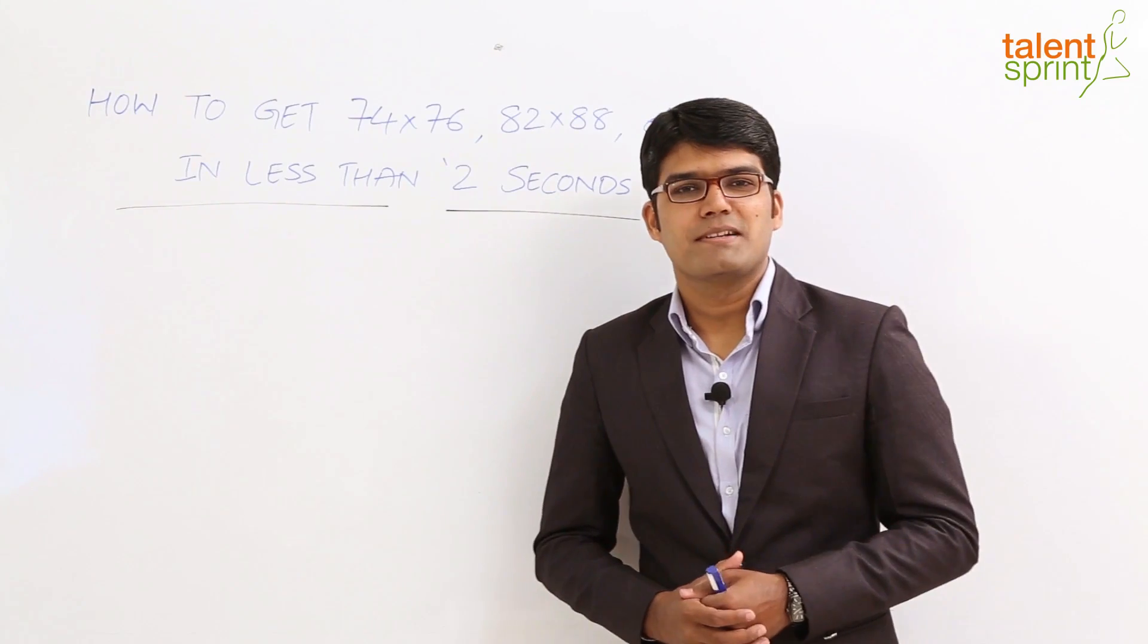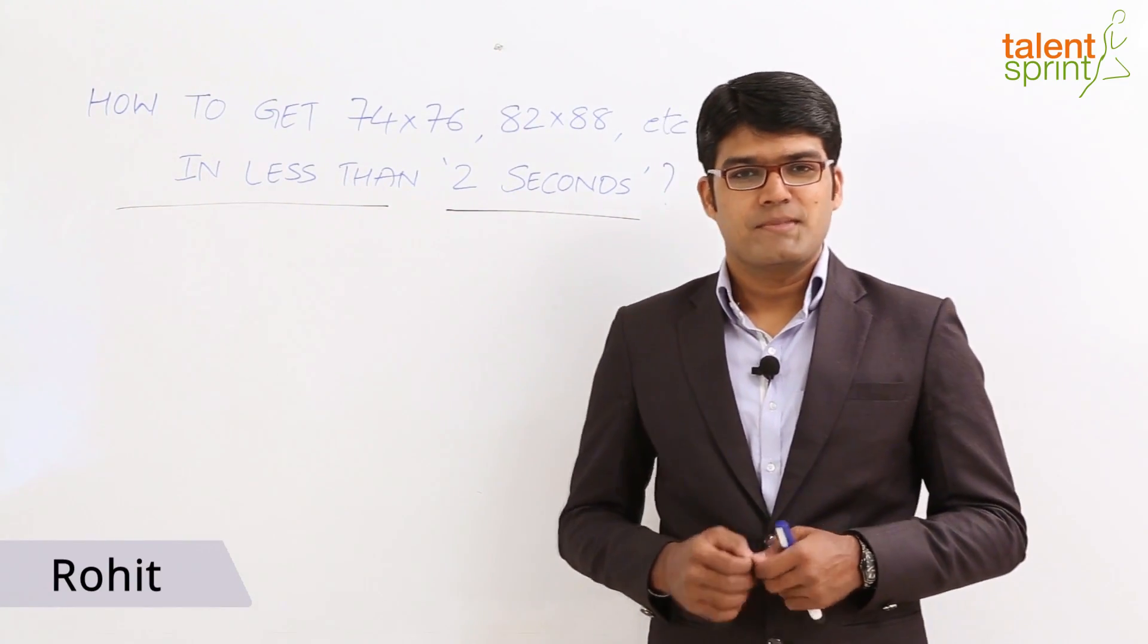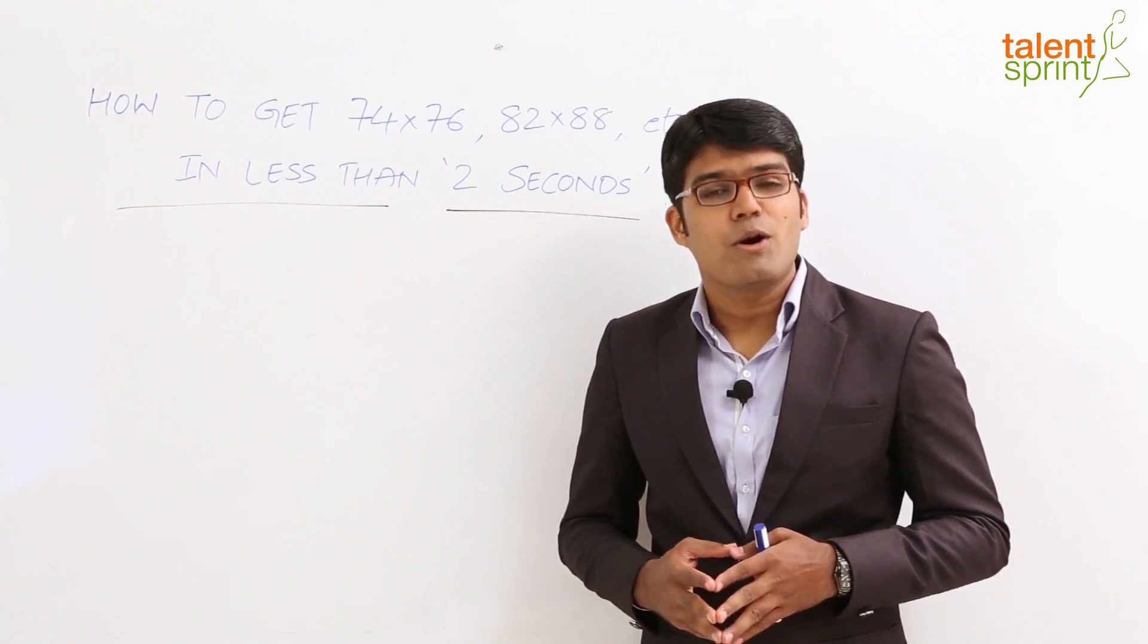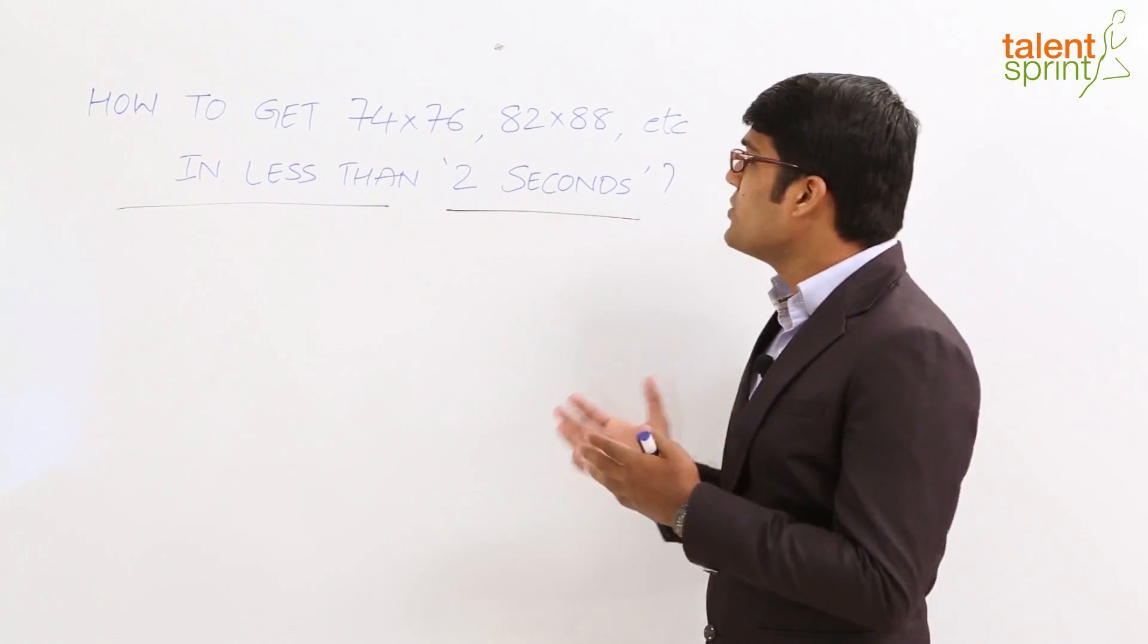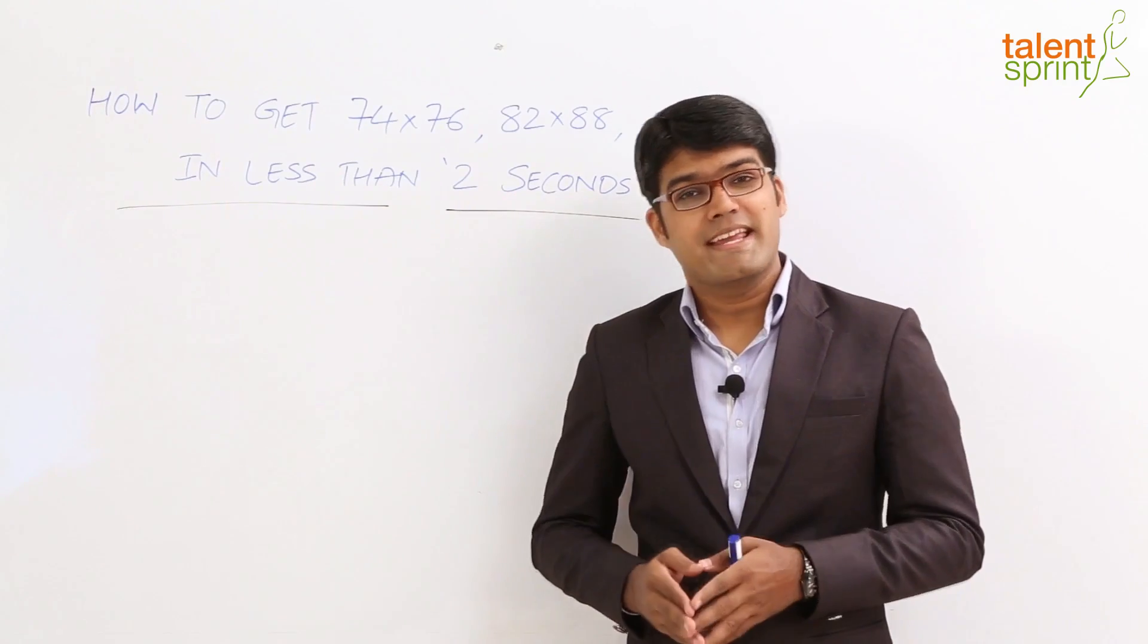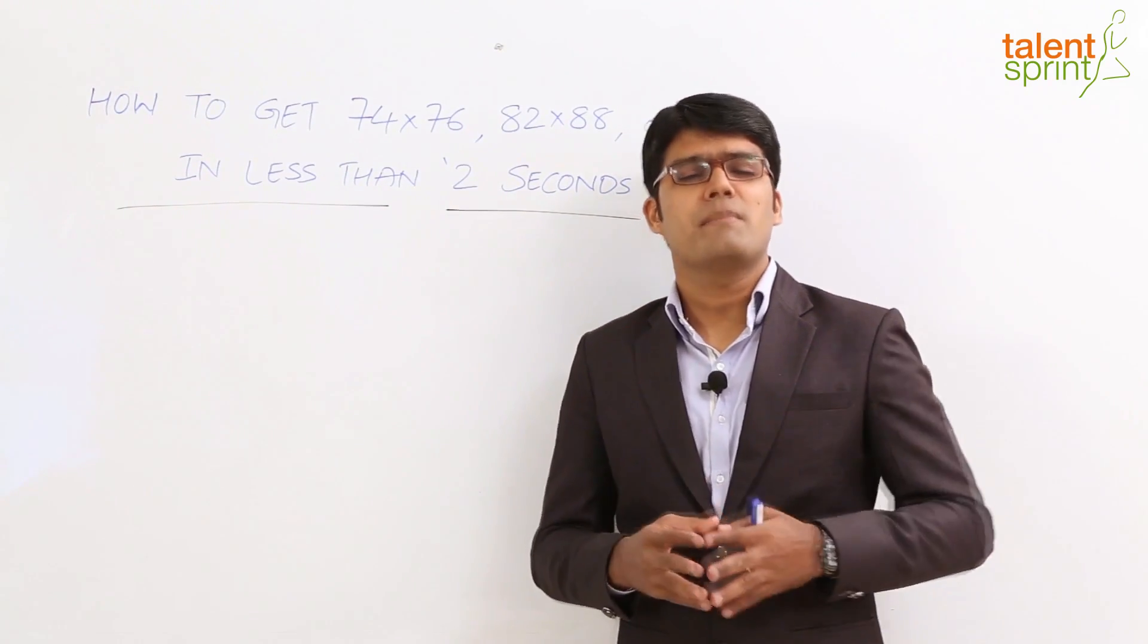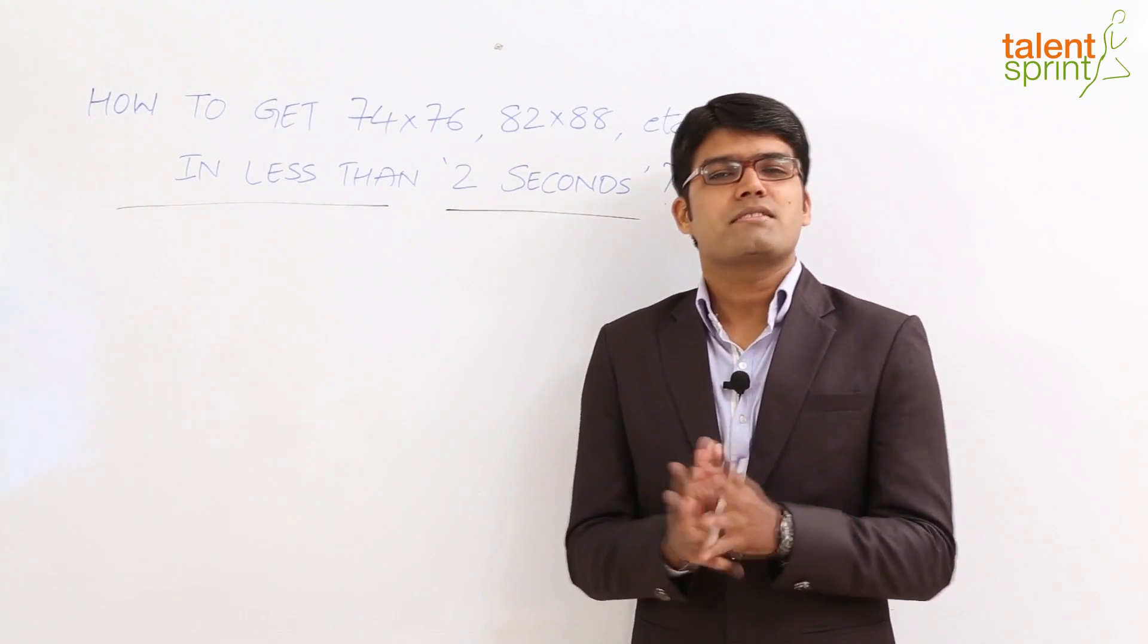Hey guys, welcome to Talent Sprint. I am Rohit Agarwal and here is your daily dose of aptitude skills. In this session today we are going to learn how to multiply partially complementary numbers like 74 and 76 or 82 and 88 in less than 2 seconds. At the end of this video you will be able to multiply partially complementary numbers or some typical two-digit numbers in just about 2 seconds.